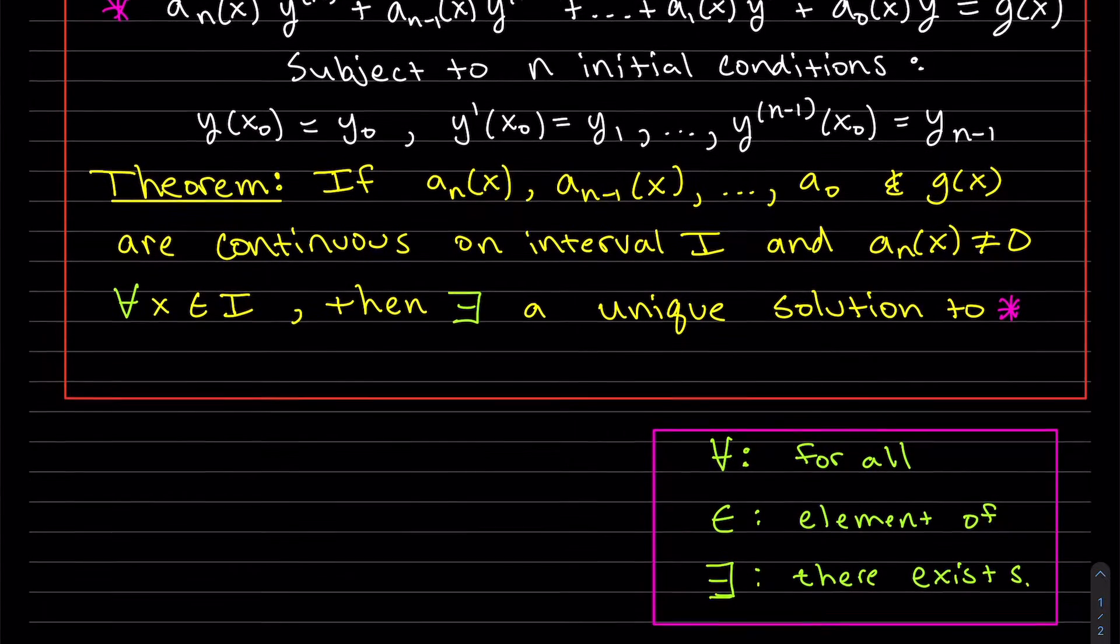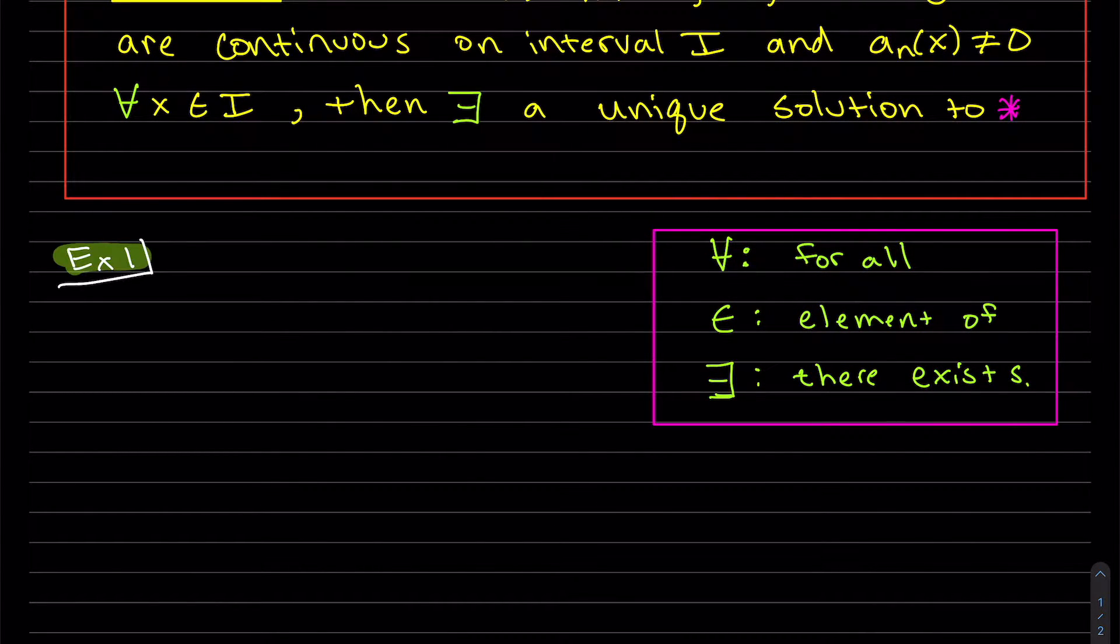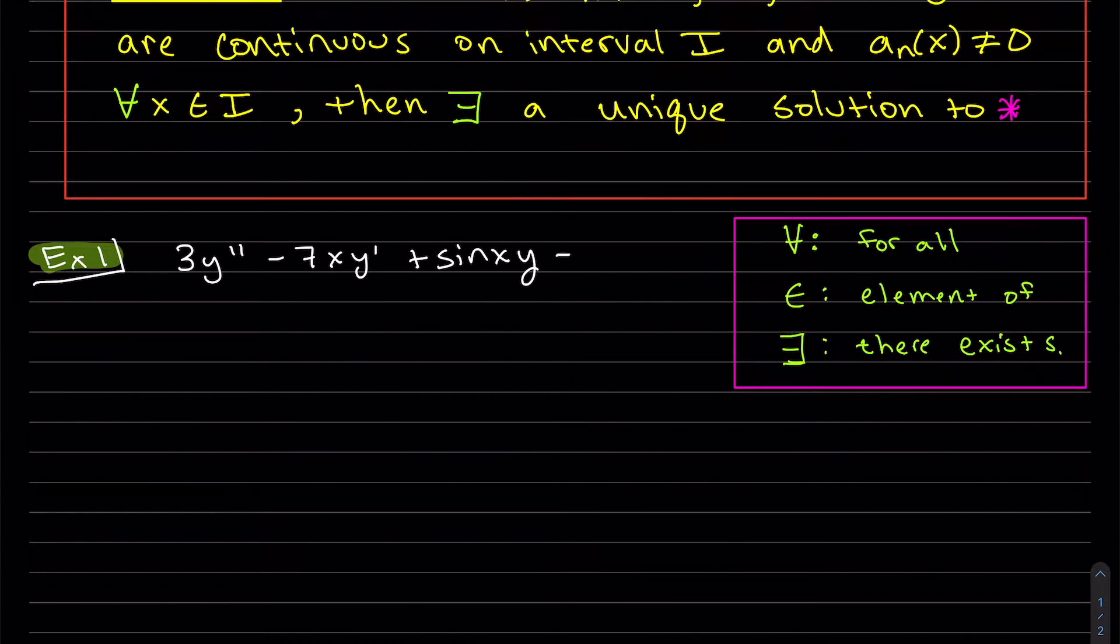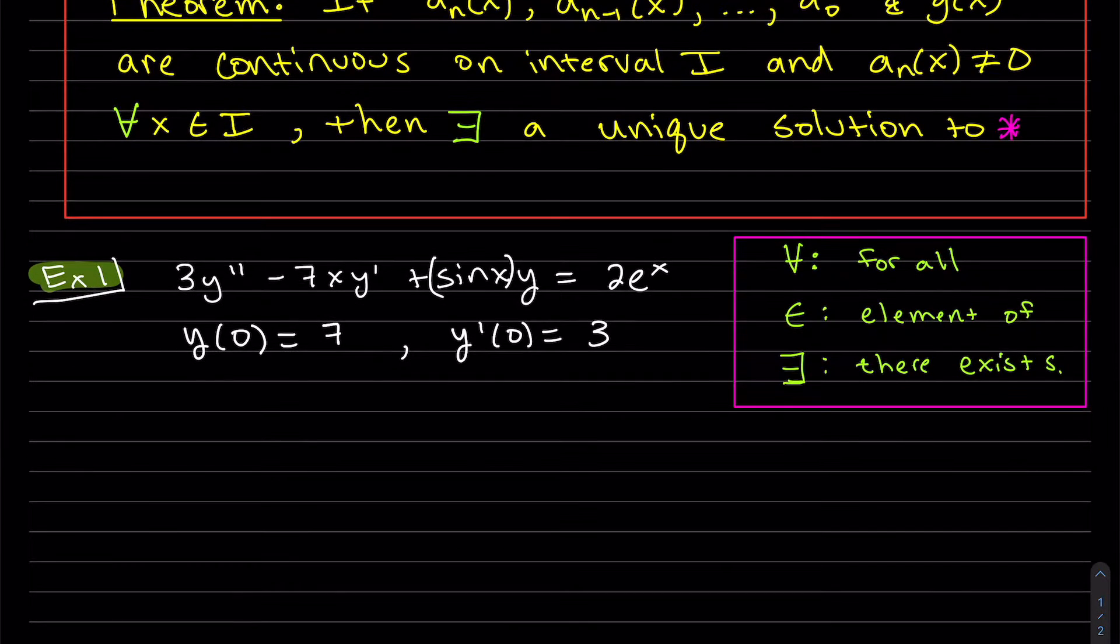Let's look at a couple examples. So by the theorem, we need to look at 3, the function 3, the function minus 7x and sine of x and also g(x) 2e^x. They're all clearly continuous.